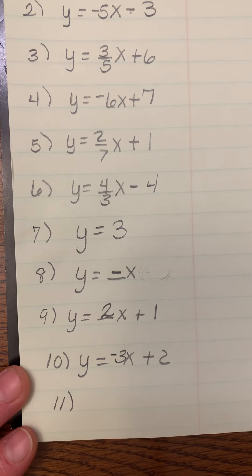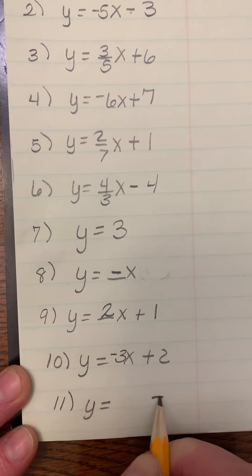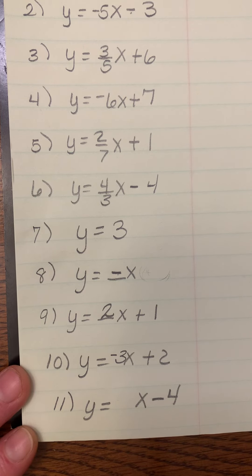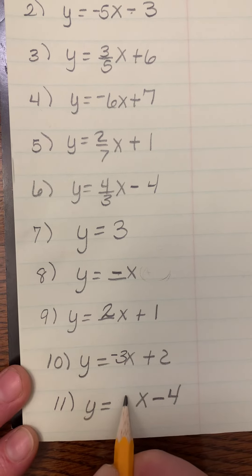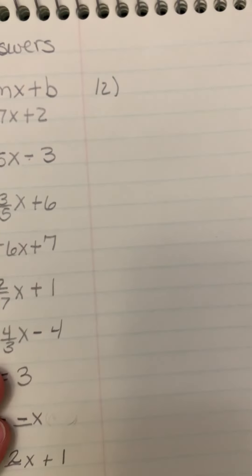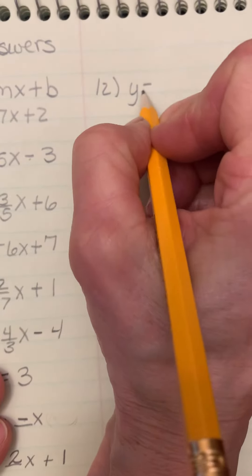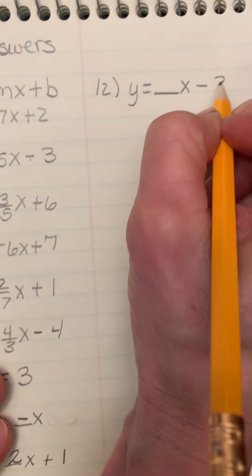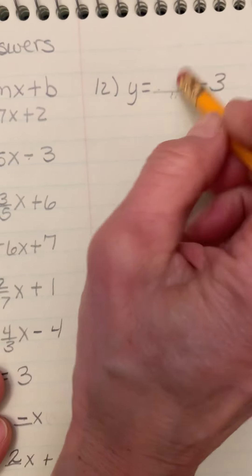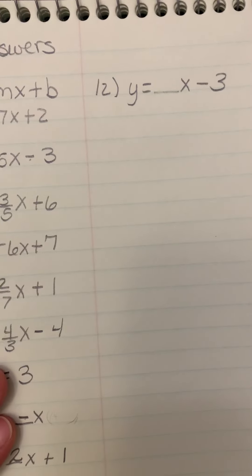Question 11: the y-intercept looks like it's at negative 4, and the slope looks like it goes up 1 and right 2, so the slope is 1/2. Question 12: the y-intercept is at negative 3. Point to point it rises 1 and runs 1, so the slope is 1, giving y = x - 3. Those should be easy — we did them quickly.